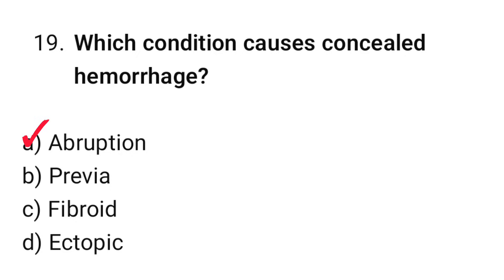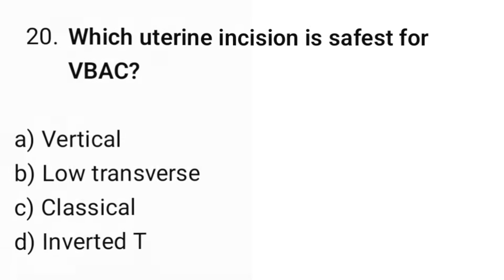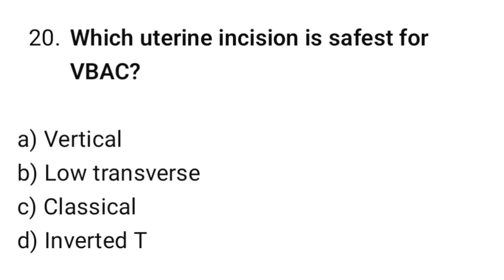Question number 19: Which condition causes concealed hemorrhage? The correct option is A: Abruption placentae.